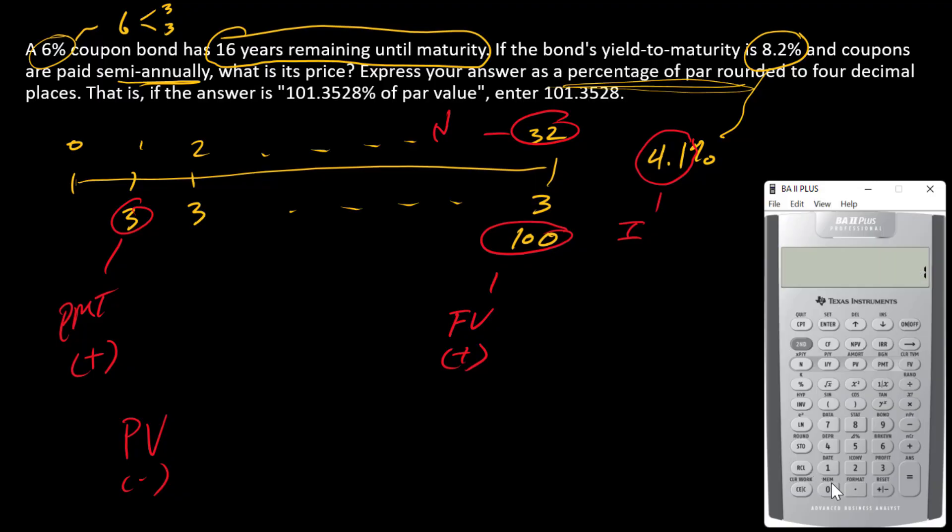Going into my financial calculator, I'll put 100 as FV, 3 as PMT, 4.1 as I and 32 as N. Compute PV or the price. And I have 80.587. So this bond is selling for 80.587% of par.